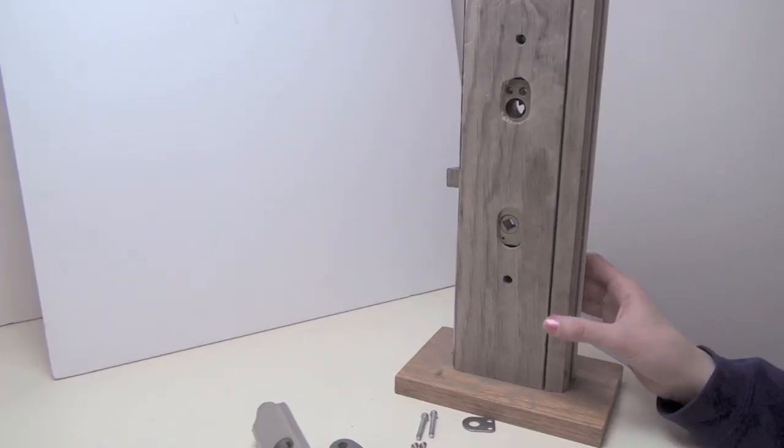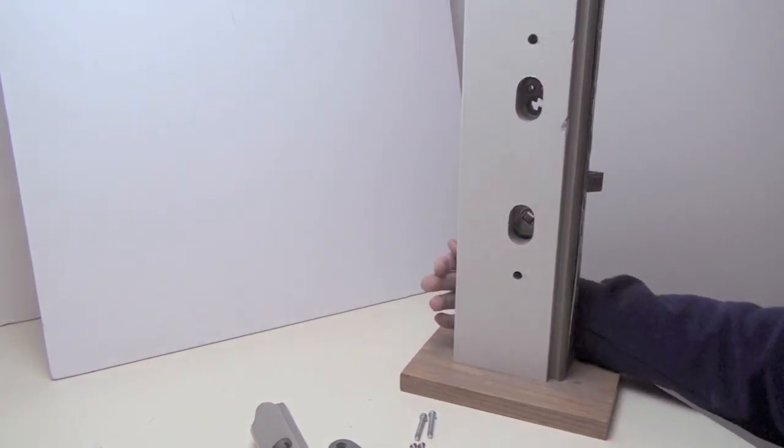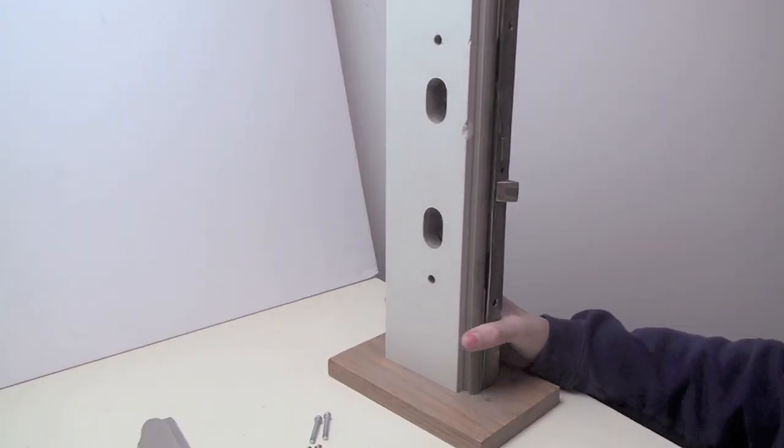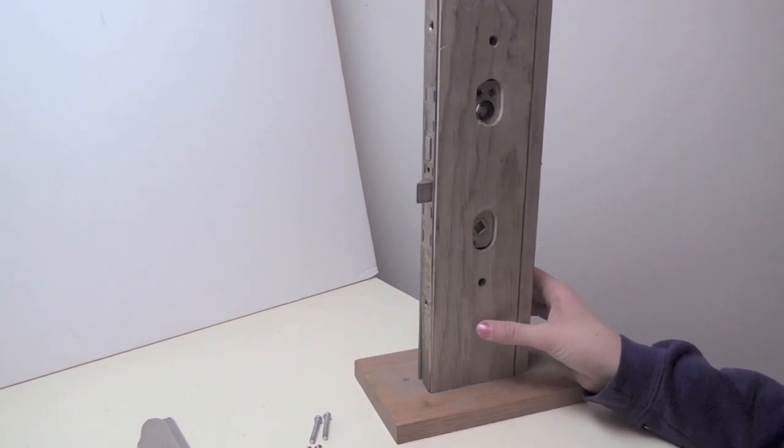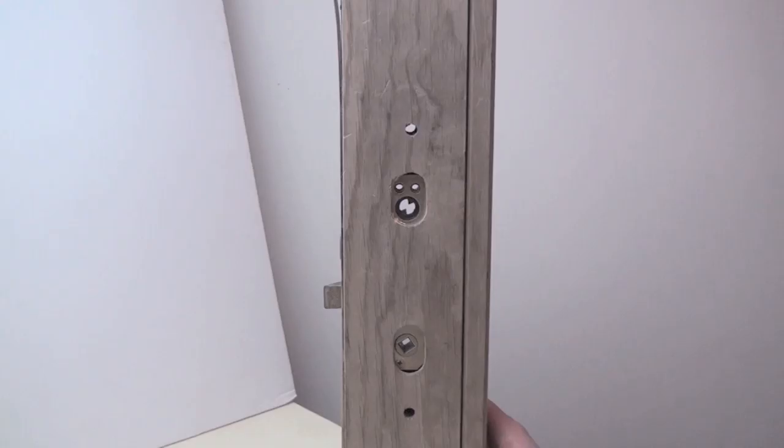We have a door cross section here with our Andersen multipoint lock already installed. We just need to install the handles. The white side is the exterior side of the door and the brown is the inside.